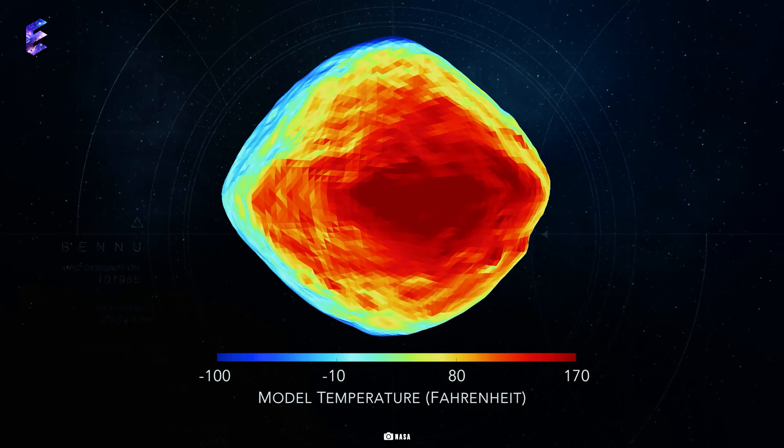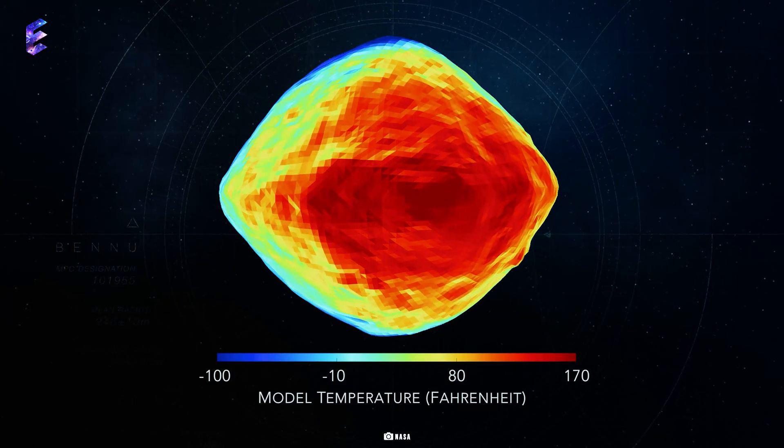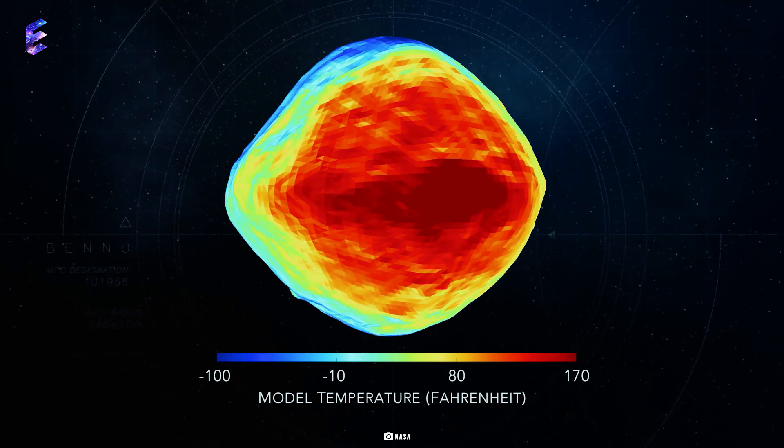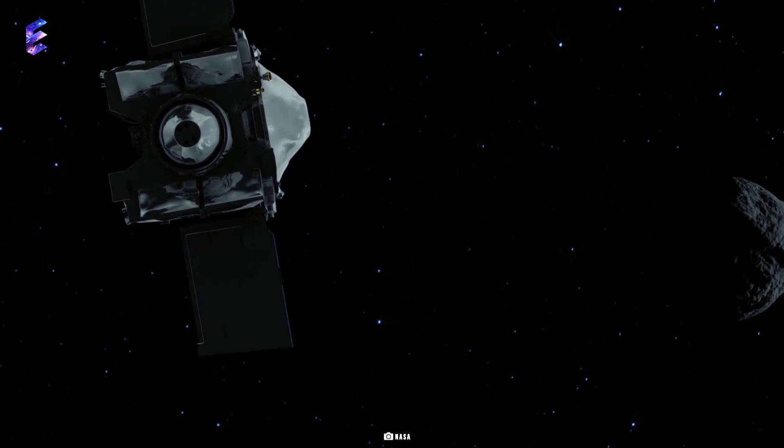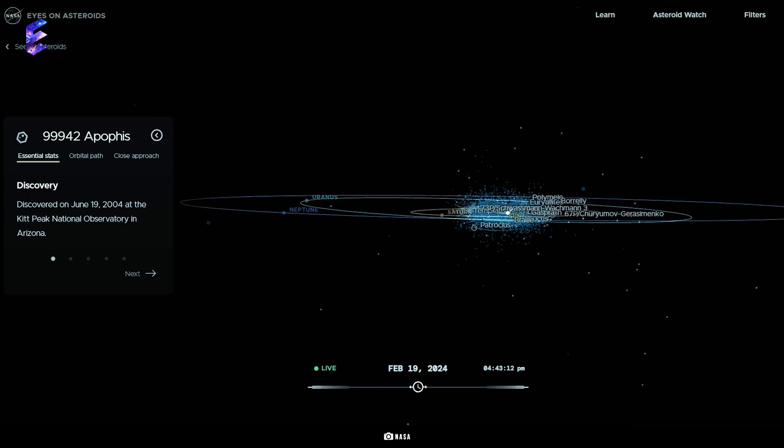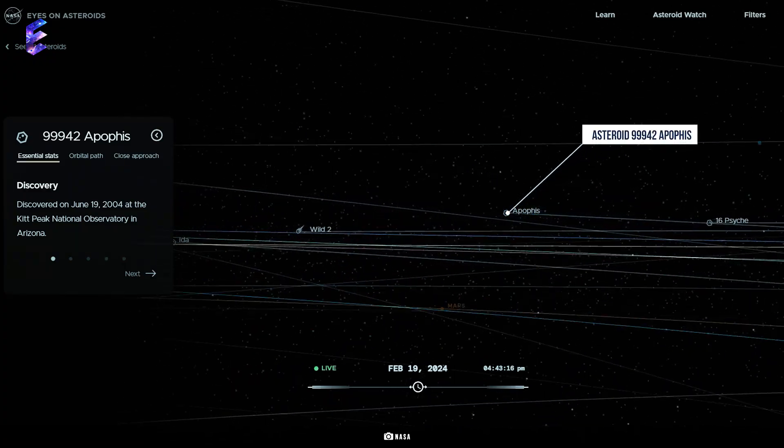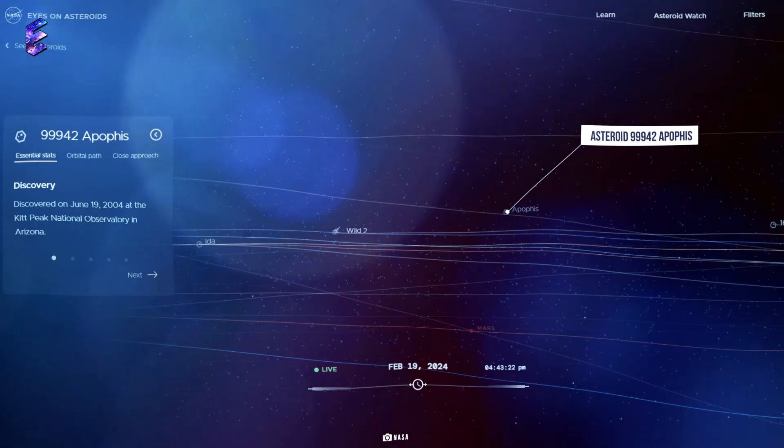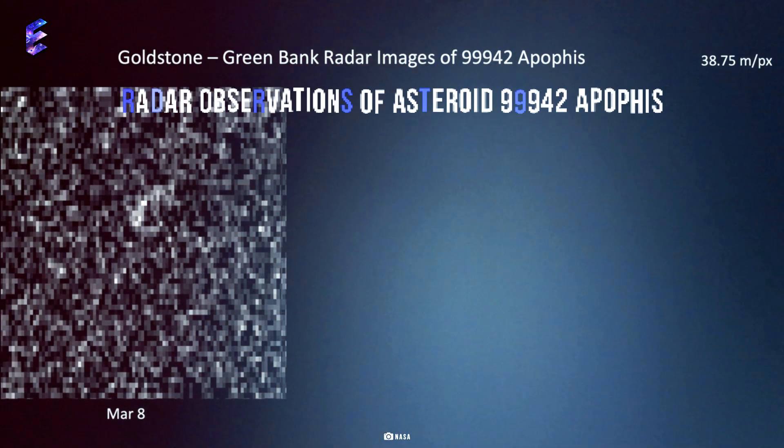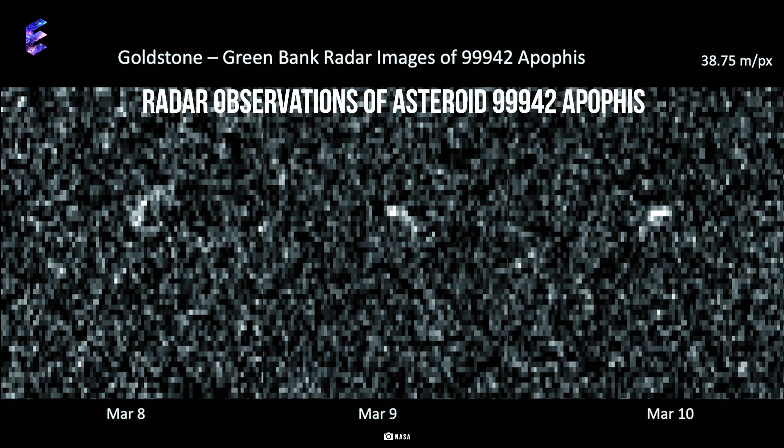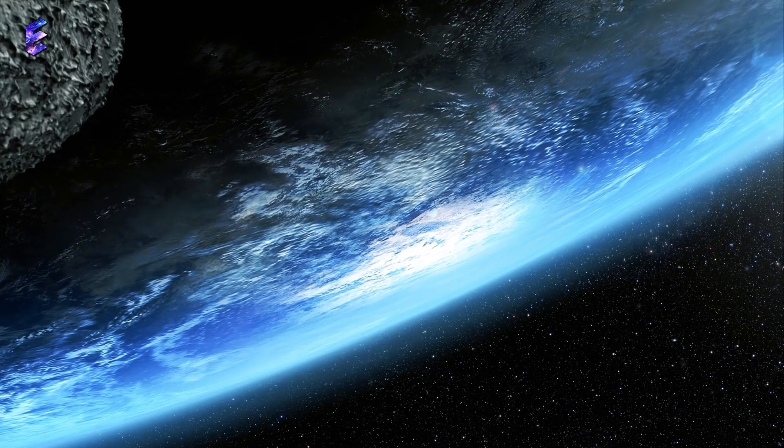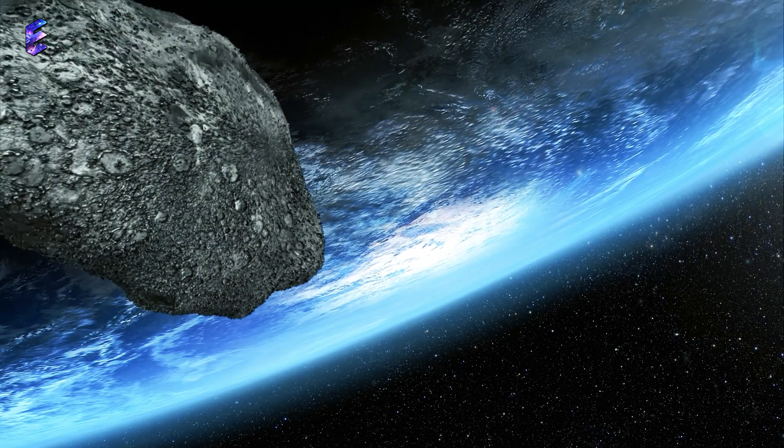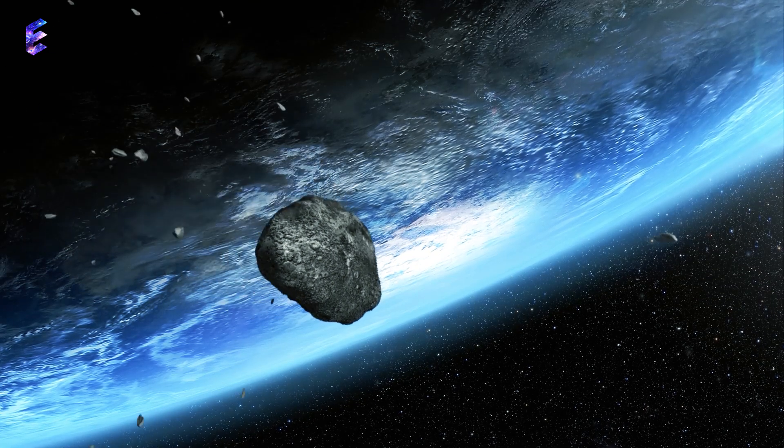Bennu has a high probability of impacting the Earth late in the 22nd century, around the year 2182. The spacecraft after dropping samples from Bennu has been sent off to asteroid 99942 Apophis for sample collection. Another near-Earth object that will be uncomfortably close in 2029. It is approximately 1,100 feet in width and is estimated to pass less than 20,000 miles from our planet's surface, making it visible to the naked eye.